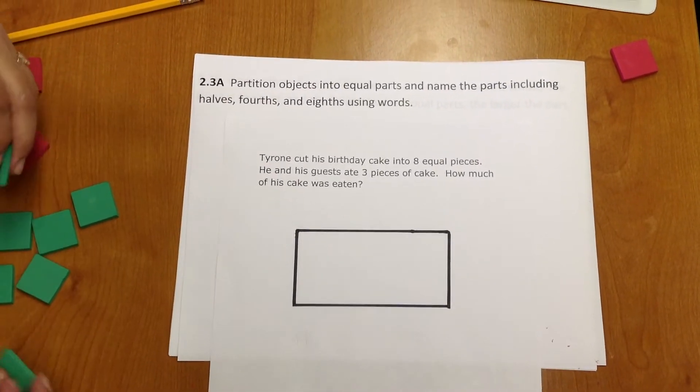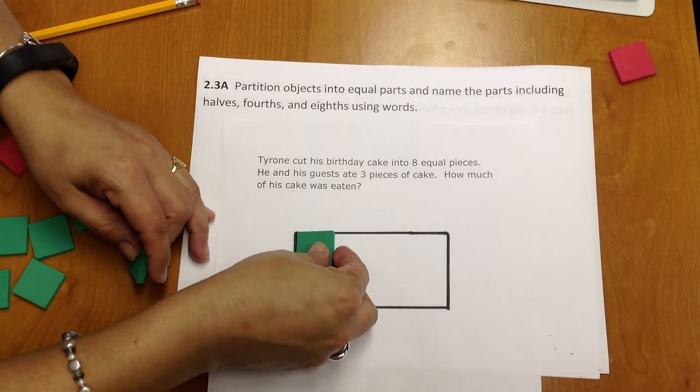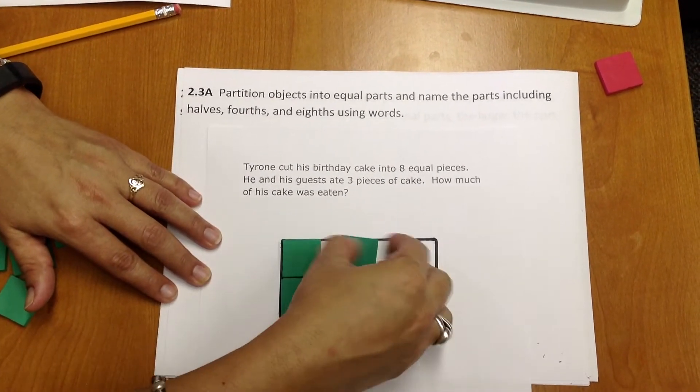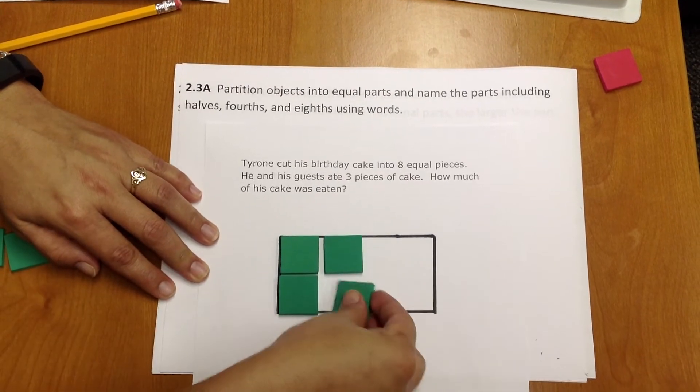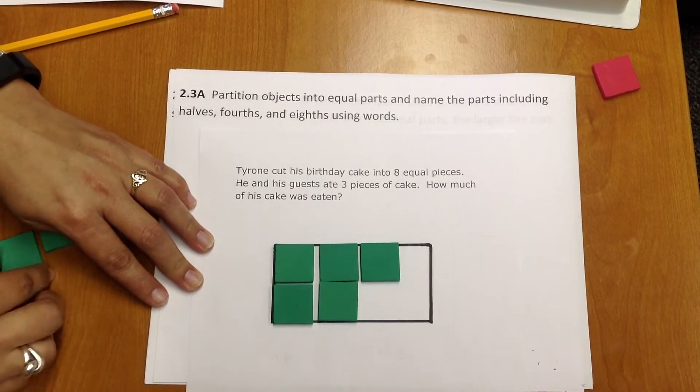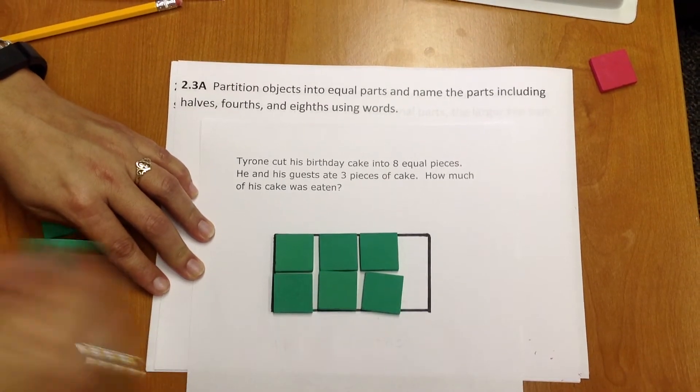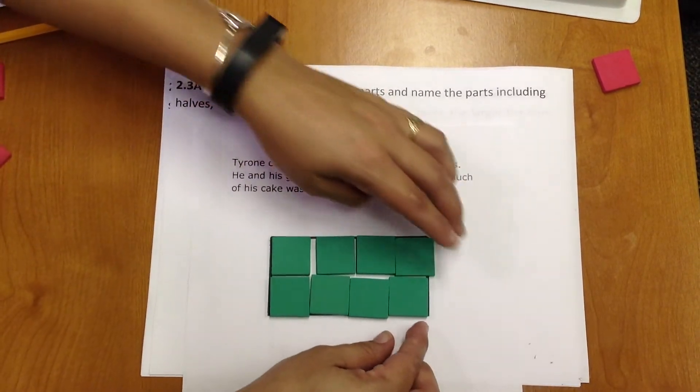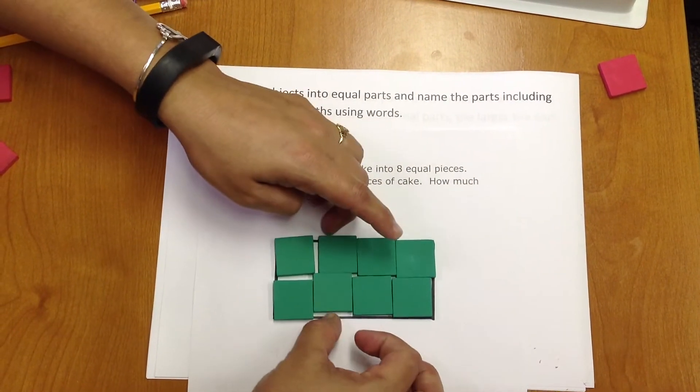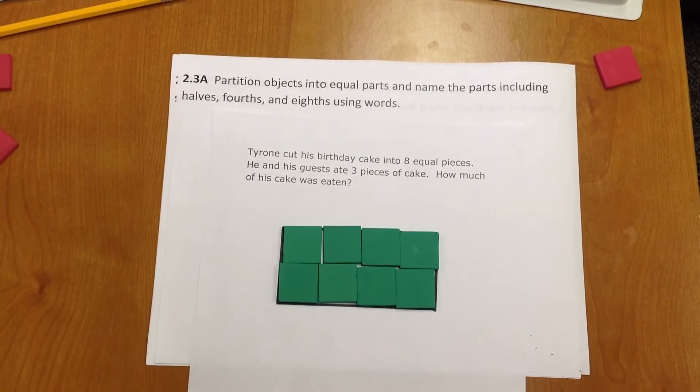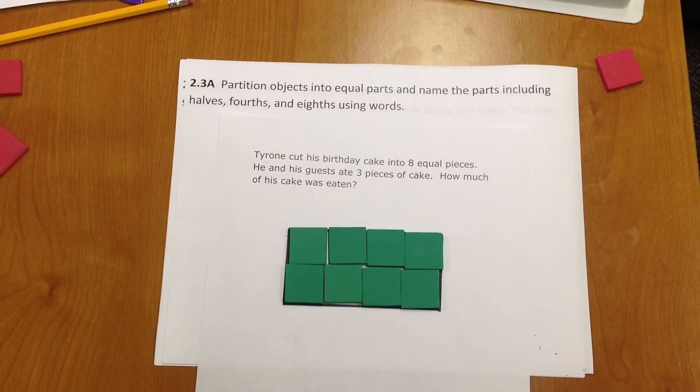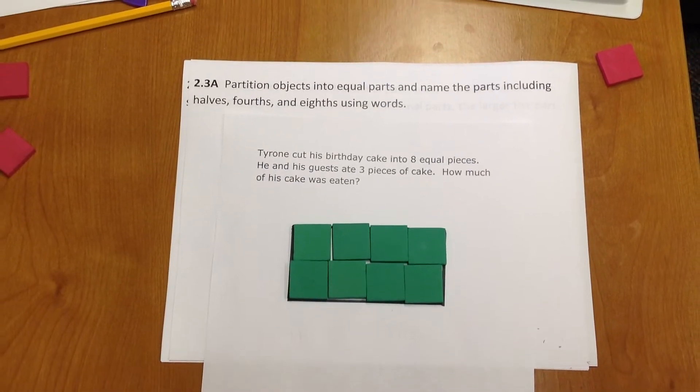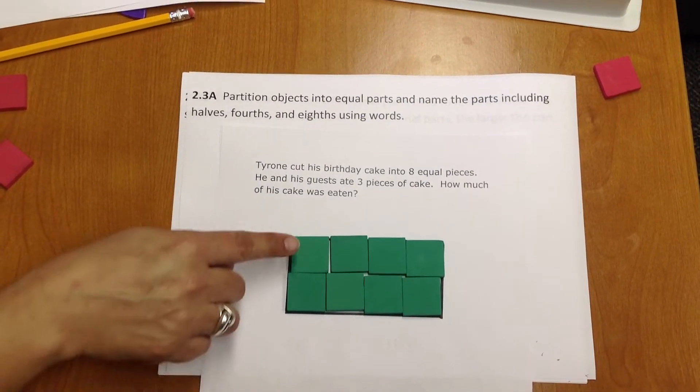I'm going to use colored tiles, green colored tiles, for this situation. The color doesn't matter to represent the eight equal pieces. So Tyrone cut his birthday cake into eight equal pieces. Each piece represents one-eighth of the cake. Let's count these.